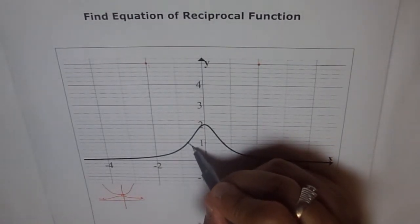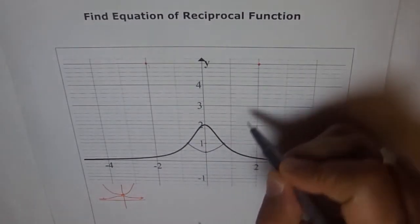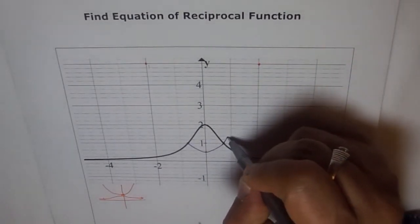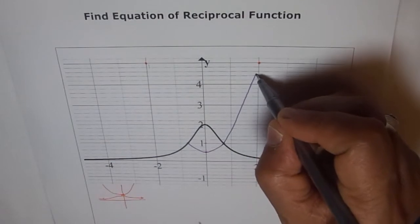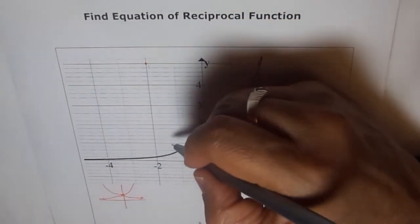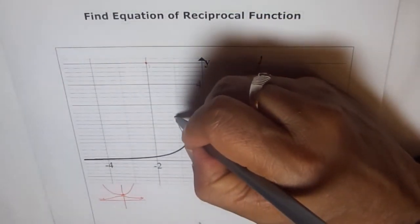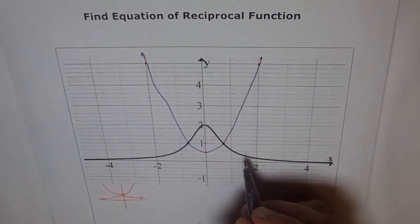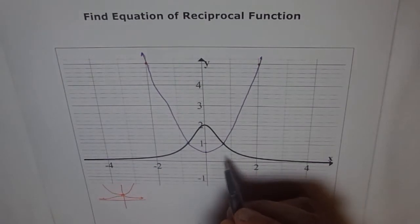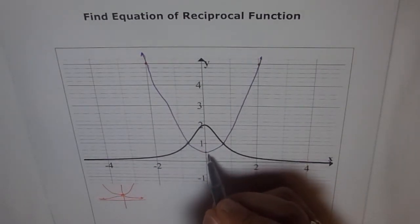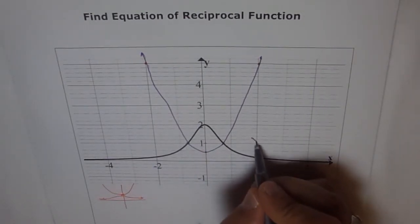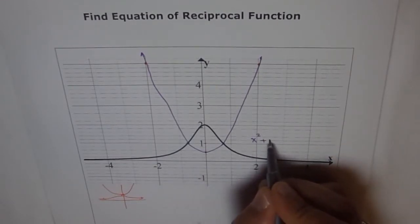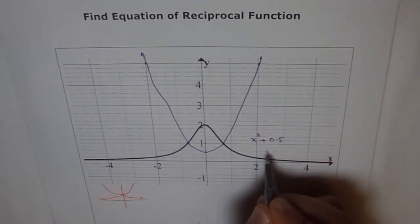So we have a parabola like this, going like this. And let me just draw a line joining the two. Similarly here. Oops. Now this is our parabola. So equation of this parabola seems to be, opening upwards, from here seems to be x squared plus half or I can write 0.5.